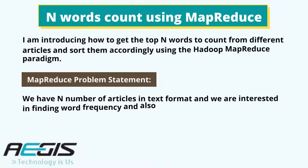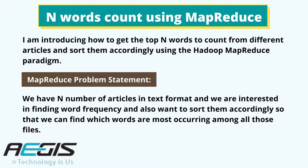I'm introducing how to get the top N words count from different articles and sort them accordingly using the Hadoop MapReduce paradigm. As per the MapReduce problem statement, we have a number of articles in text format and we are interested in finding word frequency, and also want to sort them so that we can find which words are most occurring among all those files.